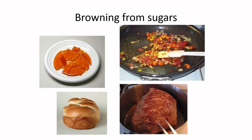Sugar can participate in two primary browning reactions. First, caramelization — that's sugar on sugar browning where we take the sugar and burn it through pyrolysis, breaking it down into brown pyrolytic products. In other cases, the sugar interacts with amino acids in the food — in the case of bread, meat, and to a lesser extent vegetables — creating Maillard products.